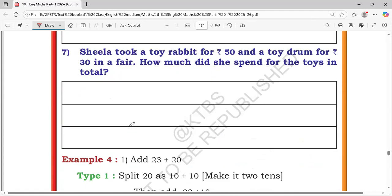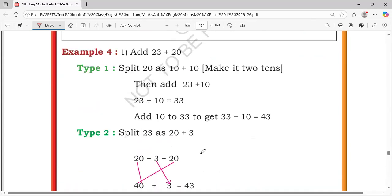7th one. Sheela took a toy rabbit for 50 rupees and a toy drum for 30 rupees in a fair. How much did she spend for the toys in total? Total first one is 50 rupees plus second one 30 rupees. Total just add this is 80 rupees.